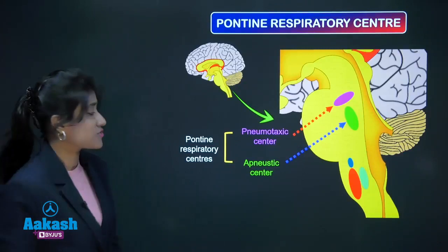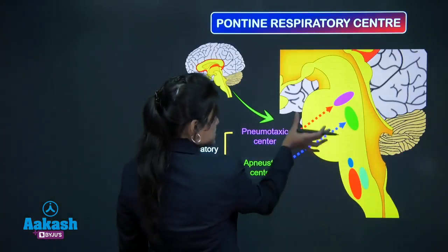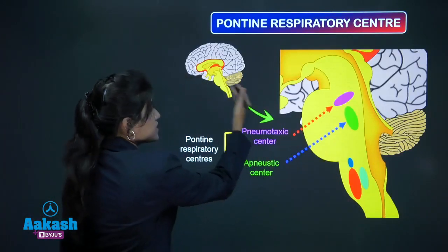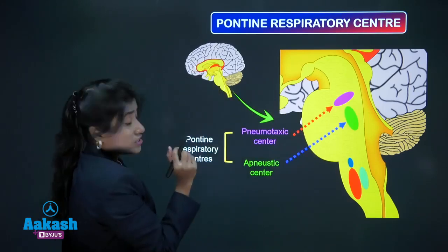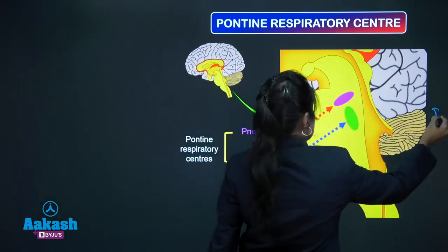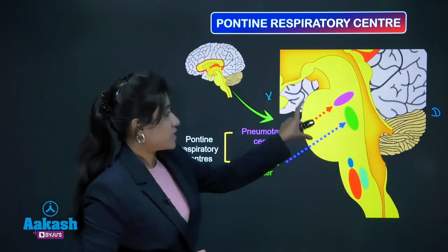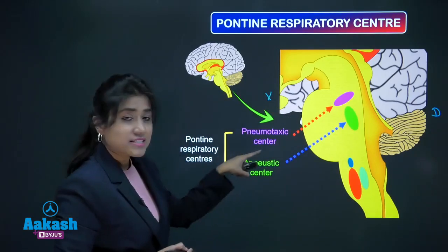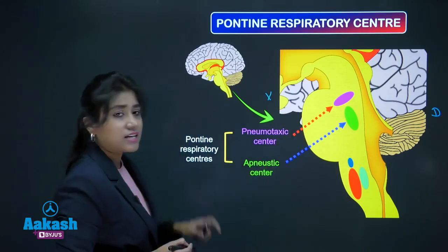Let us talk about pontine respiratory centers. This is the pons, this is the medulla — again a zoom-in view of this sagittal section. This is your ventral side, this is your dorsal side. In pons, we are having the pneumotaxic center and the apneustic center.